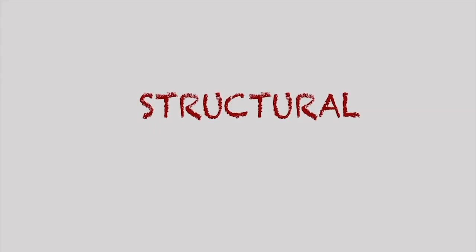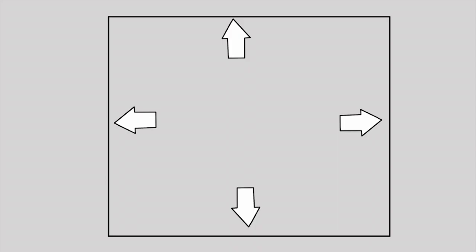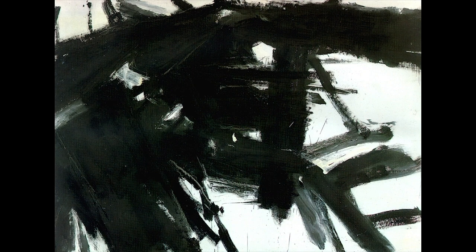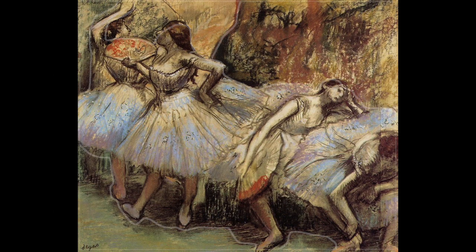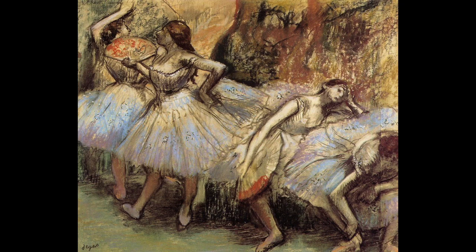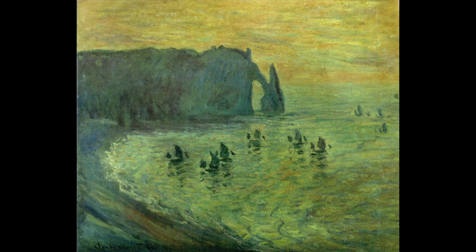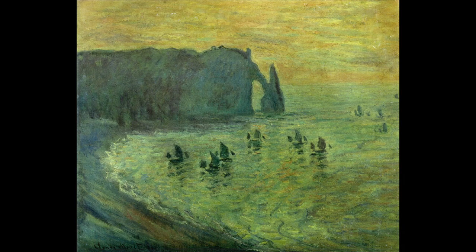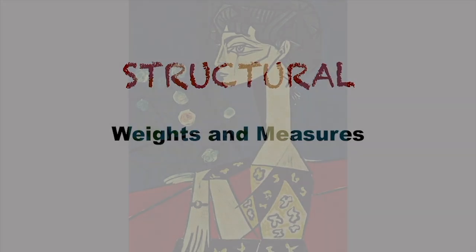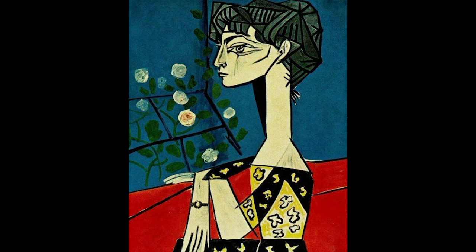The structural method of composition, as its name implies, has to do with creating a structure. Essentially, this has to do with using the edge of the painting to complete the shapes in the painting — to organize by shape. In a sense, like making a puzzle where all the pieces fit together with the perimeter of the painting completing the shapes. Structural composition includes weights and measures, or variation in size, density and placement.